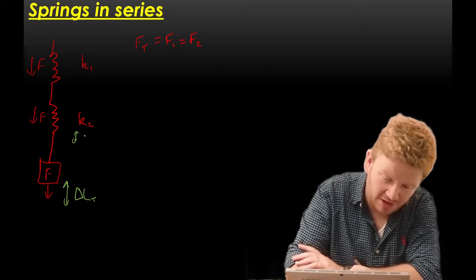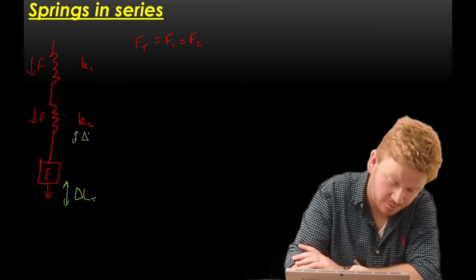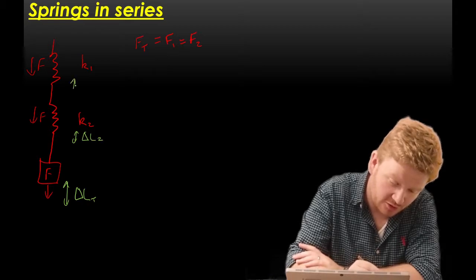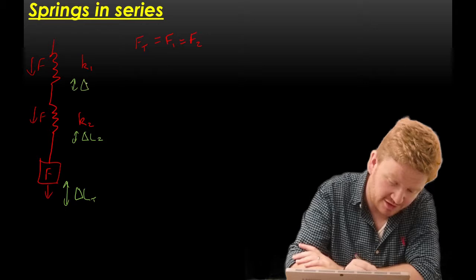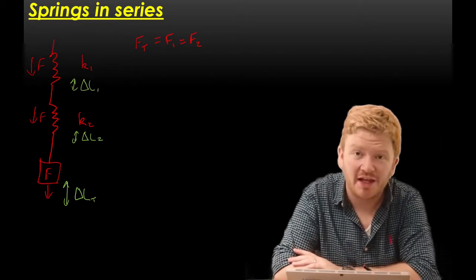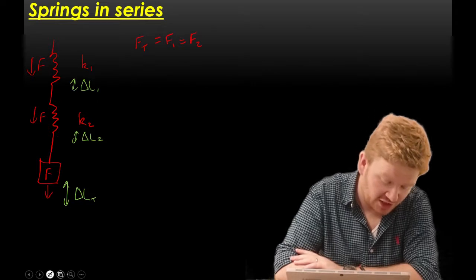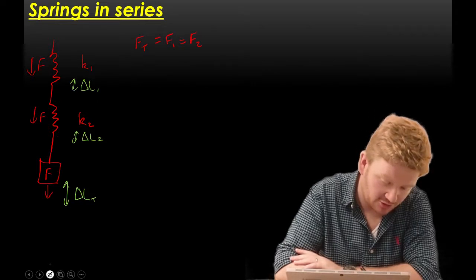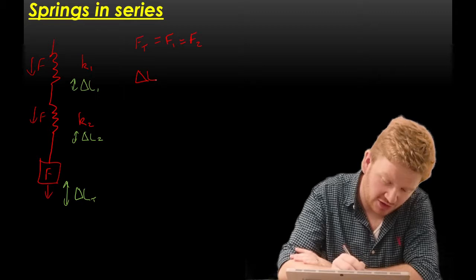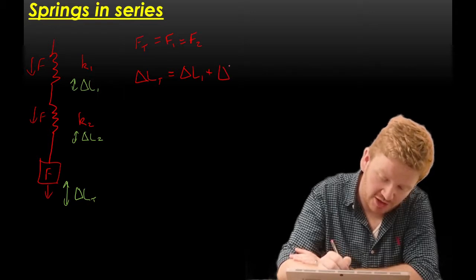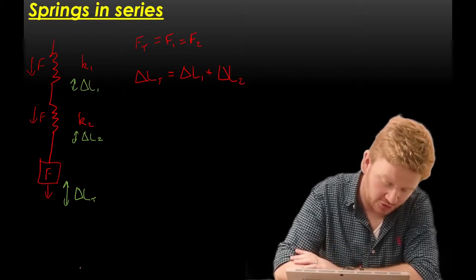Now when they're in series, both springs will stretch. So that means that I will get a delta L for spring 1, and I'm going to get a delta L for spring 2. So the second key equation that I can write is that the total extension, which I'm going to call delta Lt, that is made up of the extension of spring 1 plus the extension of spring 2.